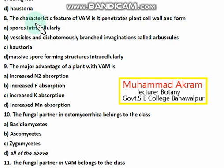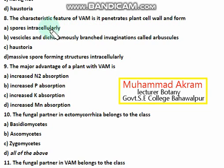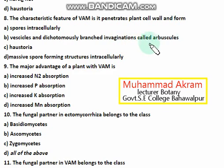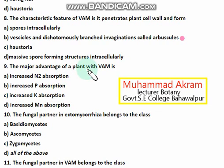The characteristic feature of endomycorrhizae is that they penetrate the plant cell wall and form vesicles and dichotomously branched invaginations called arbuscules. The right option is option B.